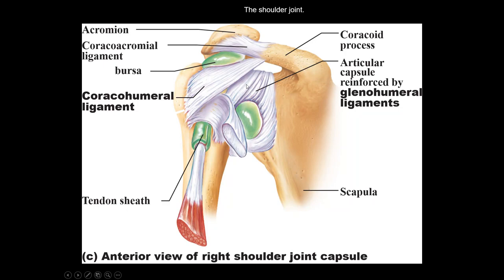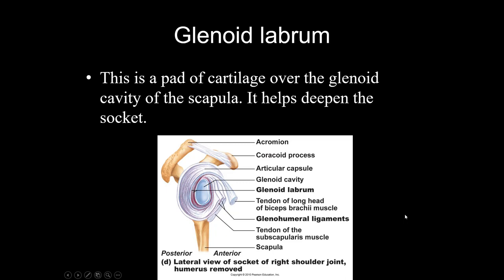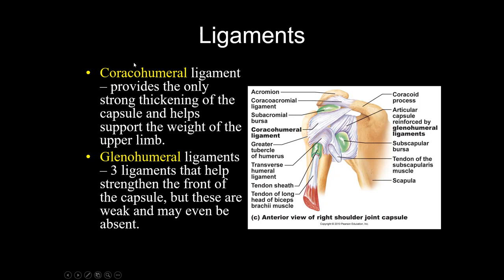The glenoid labrum is a little pad of cartilage over the glenoid cavity that helps deepen the socket, but again it's not a great articular surface so it's very easy to dislocate the shoulder. The glenohumeral ligaments usually blend into the capsule and are more to keep the capsule safe — they don't really reinforce stability much, and some people don't even have them. The rotator cuff is a set of muscles that wrap around the head of the humerus to hold it against the scapula. Pitchers injure this often because they vigorously circumduct their arm, causing inflammation in the rotator cuff and landing them on the disabled list.